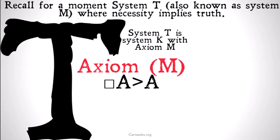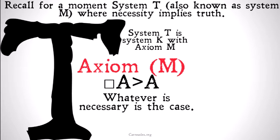Axiom M goes as follows. It's necessary that A implies that A. This seems to be a very, very intuitive axiom. Whatever is necessary is the case. And the corollary to that is going to be that anything that is the case is possible.